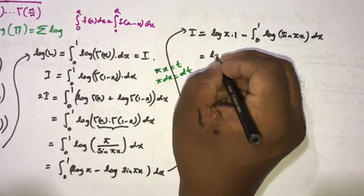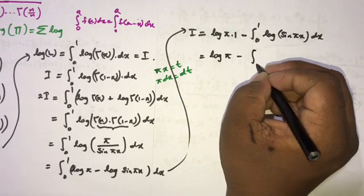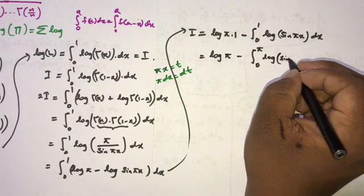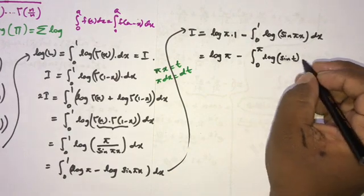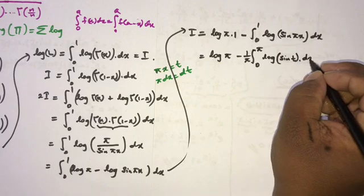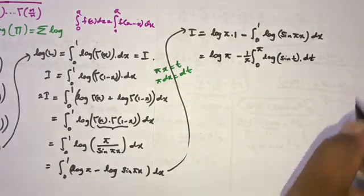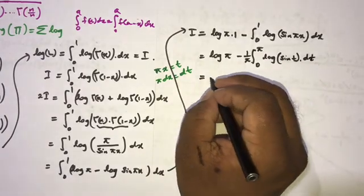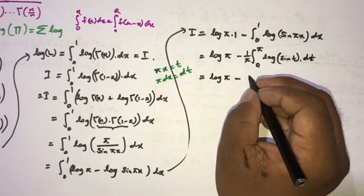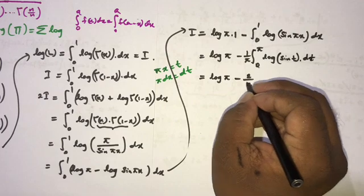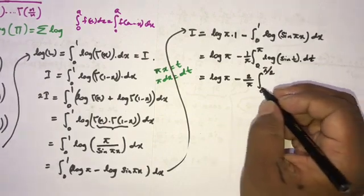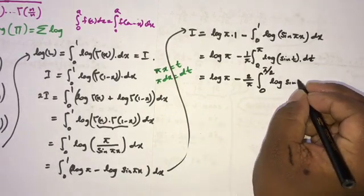After substitution, the integral becomes (1/pi) times the integral from 0 to pi of natural log of sine(t) dt. By symmetry of sine, this equals (2/pi) times the integral from 0 to pi/2 of natural log of sine(t) dt. The factor of 1/pi is a constant pulled outside, and we multiply by 2 to halve the upper limit.